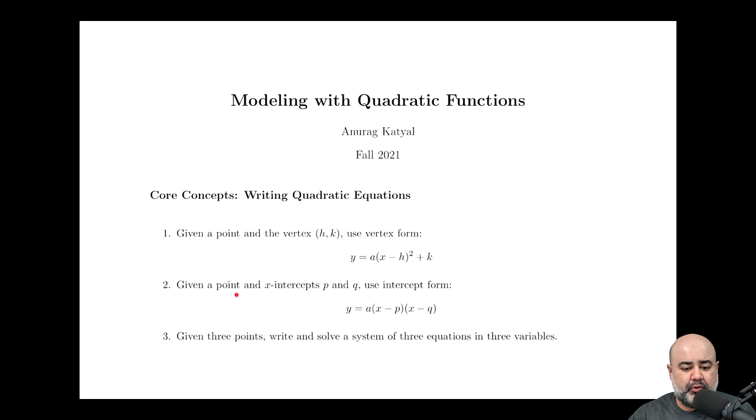On the other hand, if we're given a point and x-intercepts instead, we can use the intercept form, which is similar but not the same, and that equation is y equals a times the quantity x minus p, p is the first x-intercept, times the quantity x minus q, q is the second one.